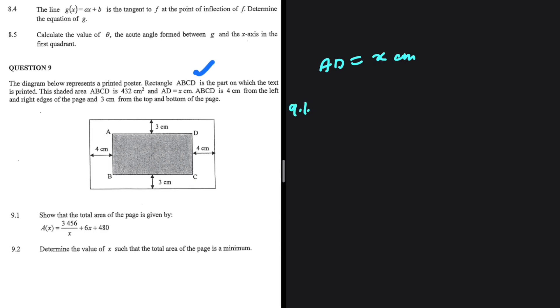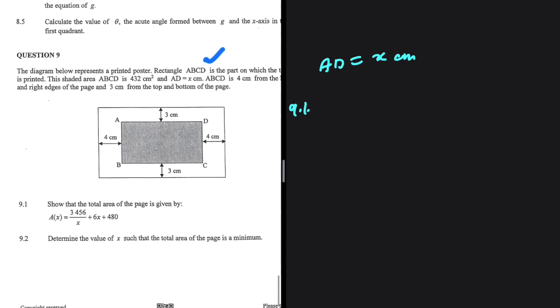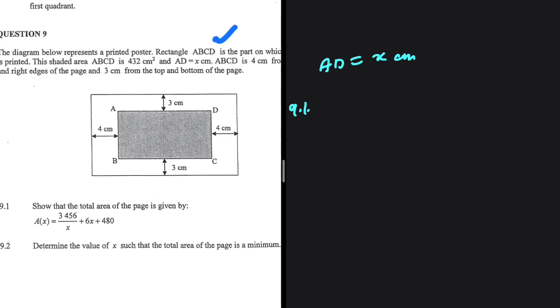The first question, 9.1, asks us to show that the total area of the page is given by A = 3456/x + 6x + 480. Let's go ahead and make sense of that.